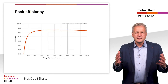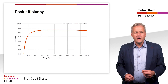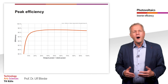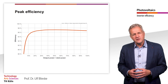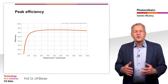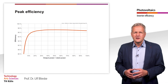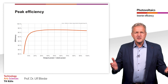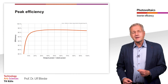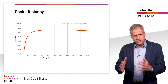In the datasheet of an inverter you will usually find an indication of its maximum efficiency. However, this peak efficiency is only achieved with a very specific input power and voltage. The efficiency is not constant, but depends significantly on the input power and the input voltage.